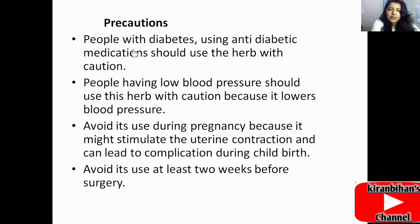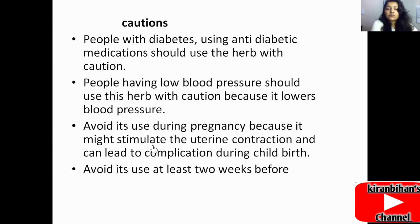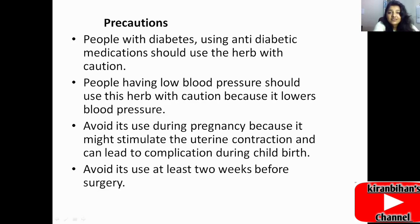Precautions during Ocimum basilicum treatment: people with diabetes using antidiabetic medication should use this herb with caution. People with low blood pressure should use it with caution as it lowers blood pressure. Avoid its use during pregnancy because it might stimulate uterine contraction and can lead to complications during childbirth — it is very dangerous in pregnancy. Avoid its use at least two weeks before surgery.